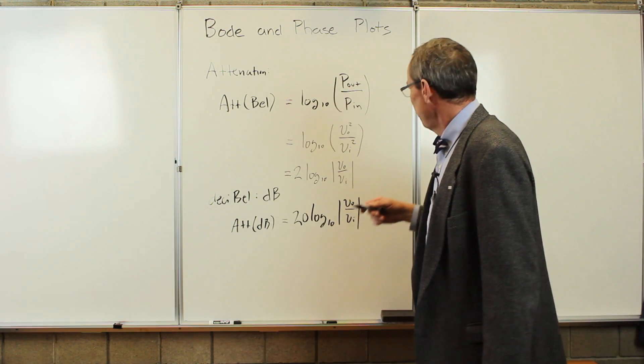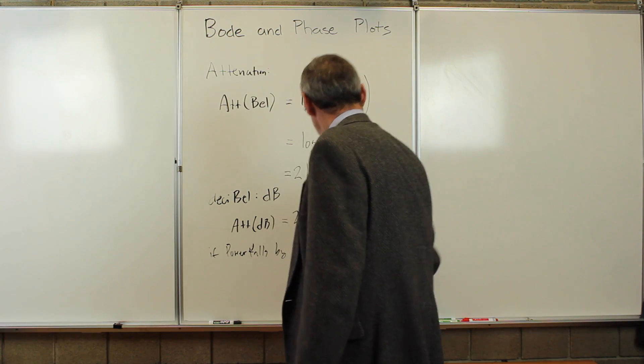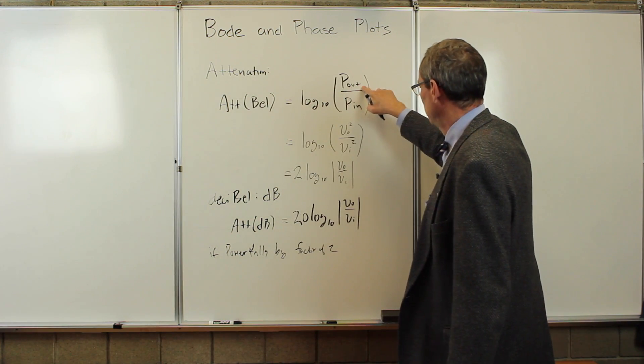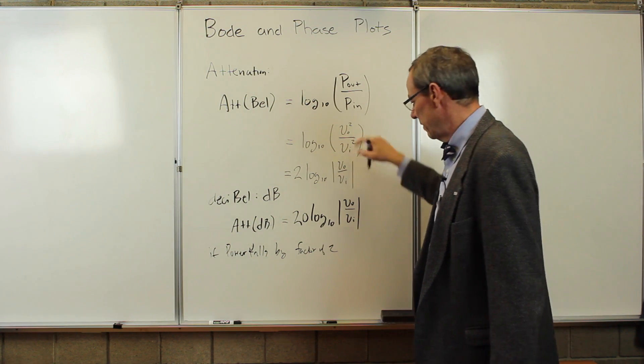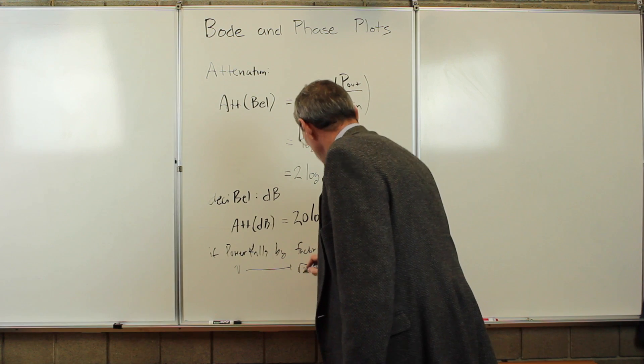One more thing we can do is if the power falls by a factor of two, so if this power goes down by a factor of two, the voltage goes down by the square root of two.